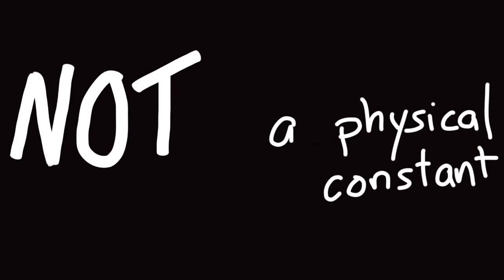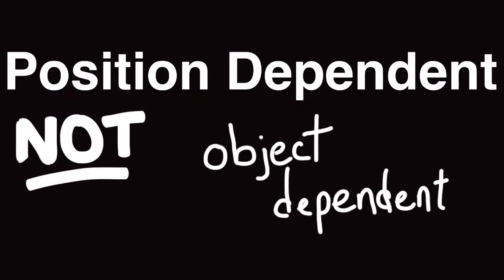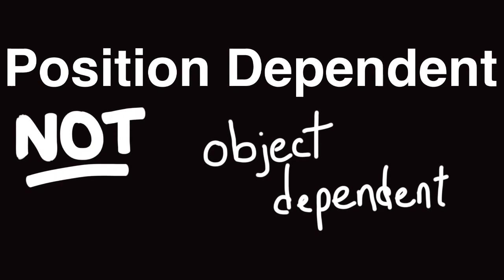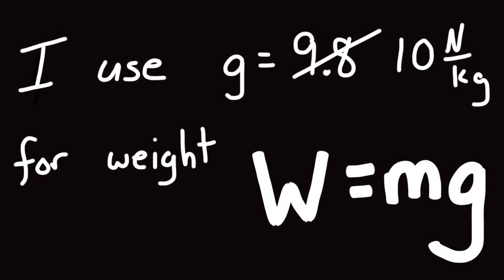Remember that everywhere you go in the universe, little g is going to be different. The gravitational field strength, the acceleration of gravity, they're going to be different. It's not a physical constant. And it's dependent upon the position in the gravitational field. It's not about the object. It's not about the tennis ball. It's all about the location.